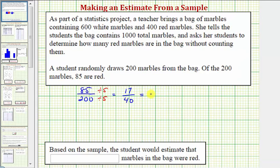So again, as a decimal, we had 0.425, which equals 42.5 percent. So we can also say that the student would estimate that 42.5 percent of the total 1,000 marbles would be red.